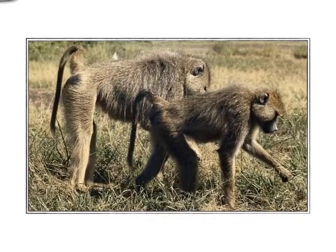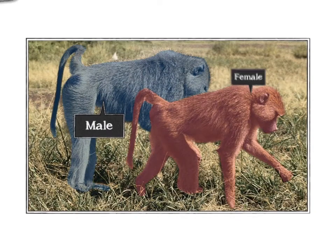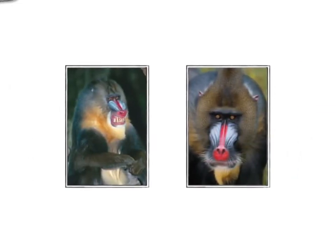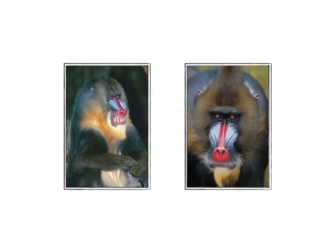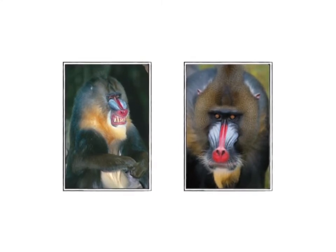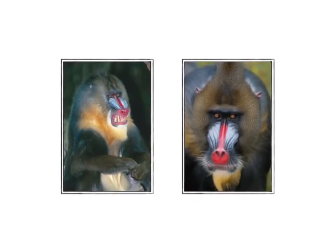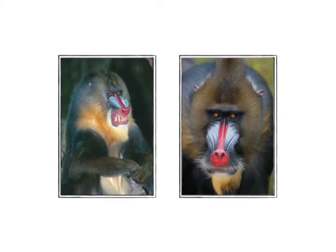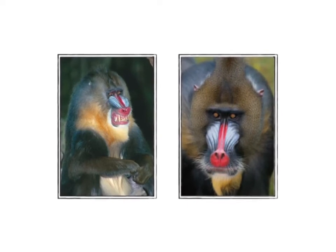The overall differences between males and females in size or appearance that often result from sexual selection is called sexual dimorphism. Let's focus now on primates. The brightly colored faces and rumps of male mandrills is thought to be an example of intersexual selection, where females prefer the more colorful males.